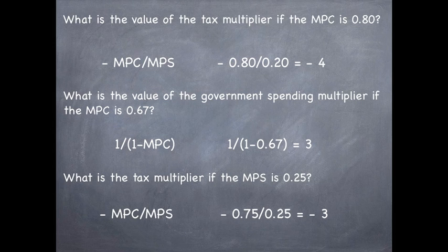What is the value of the government spending multiplier if the MPC is 0.67? We take 1 divided by 1 minus MPC, which is 1 divided by 1 minus 0.67, which equals 3.